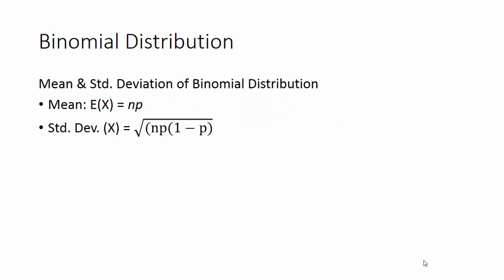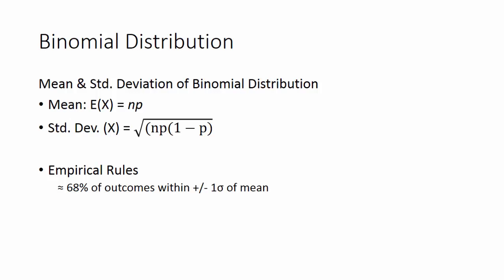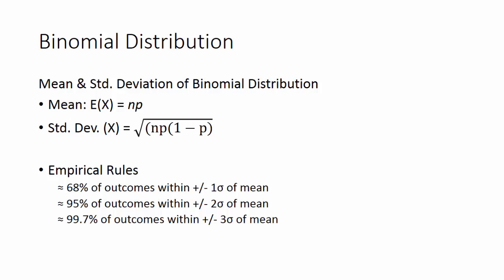The standard deviation is defined as the square root of the mean times one minus the probability — that is, sqrt(n·p·(1−p)). What's interesting about the binomial distribution is that it follows the empirical rules: about 68% of outcomes are within plus or minus one standard deviation of the mean, 95% within plus or minus two sigma, and 99.7% within plus or minus three sigma.